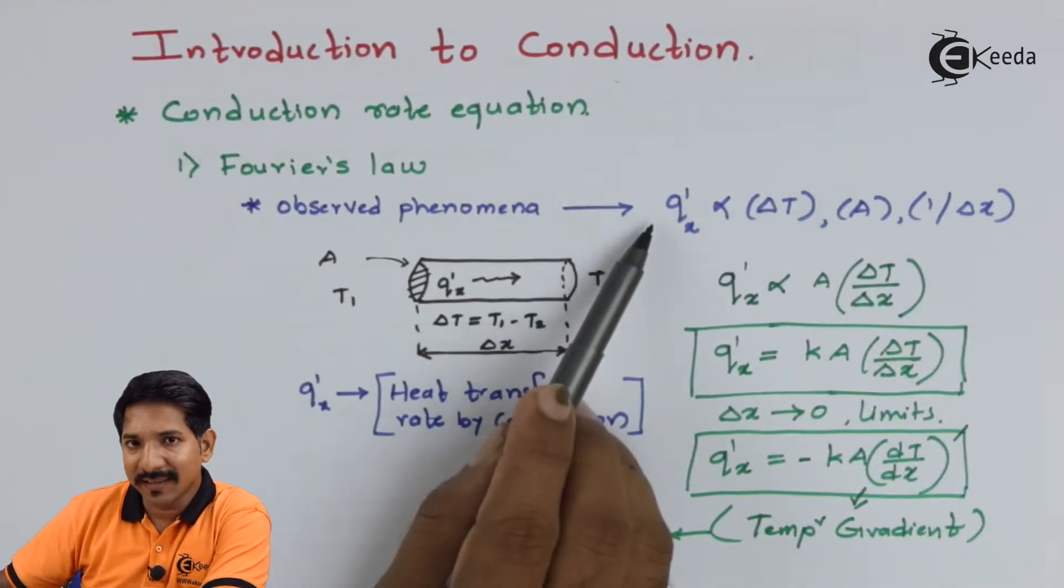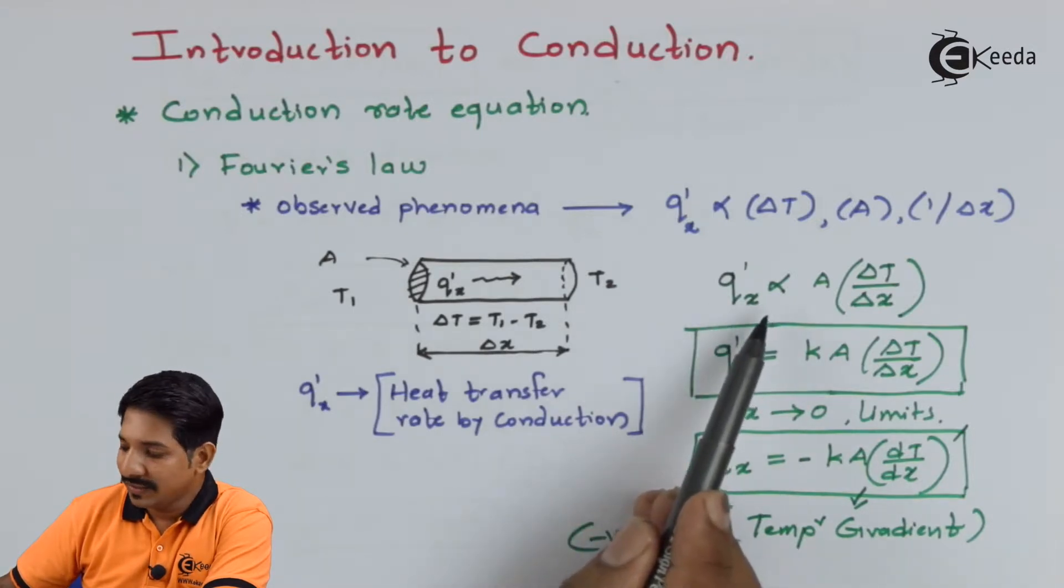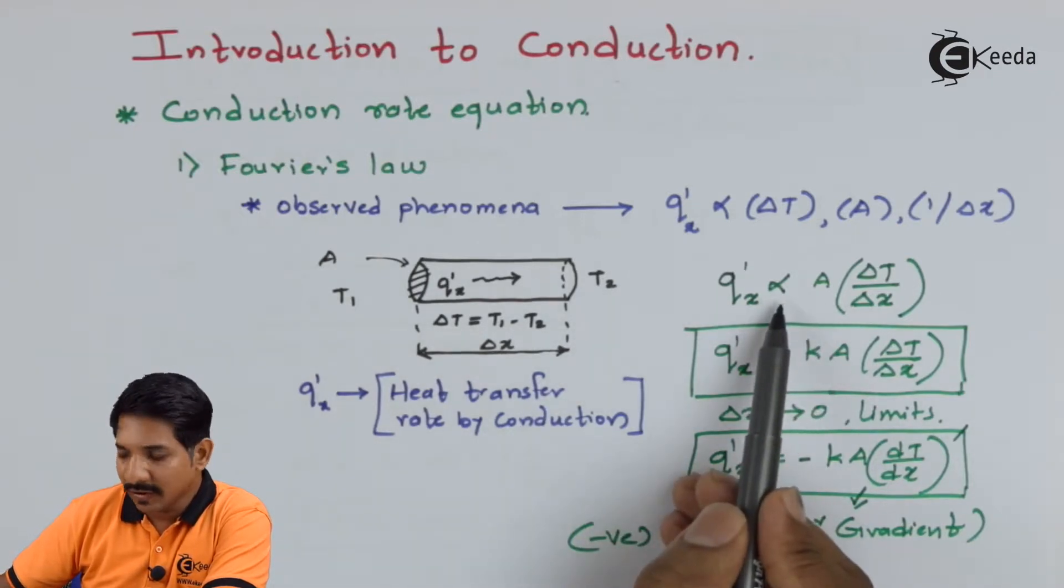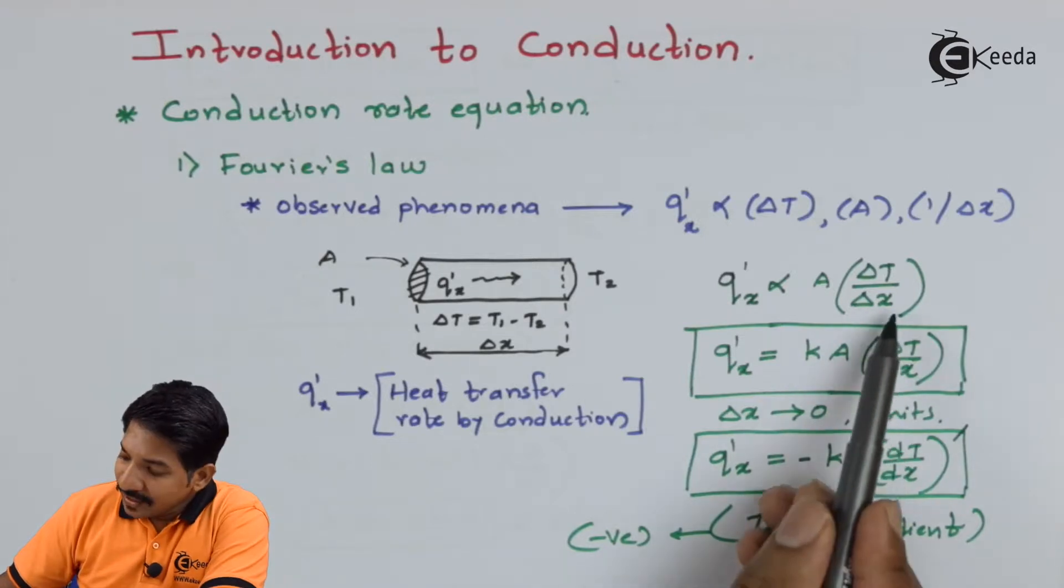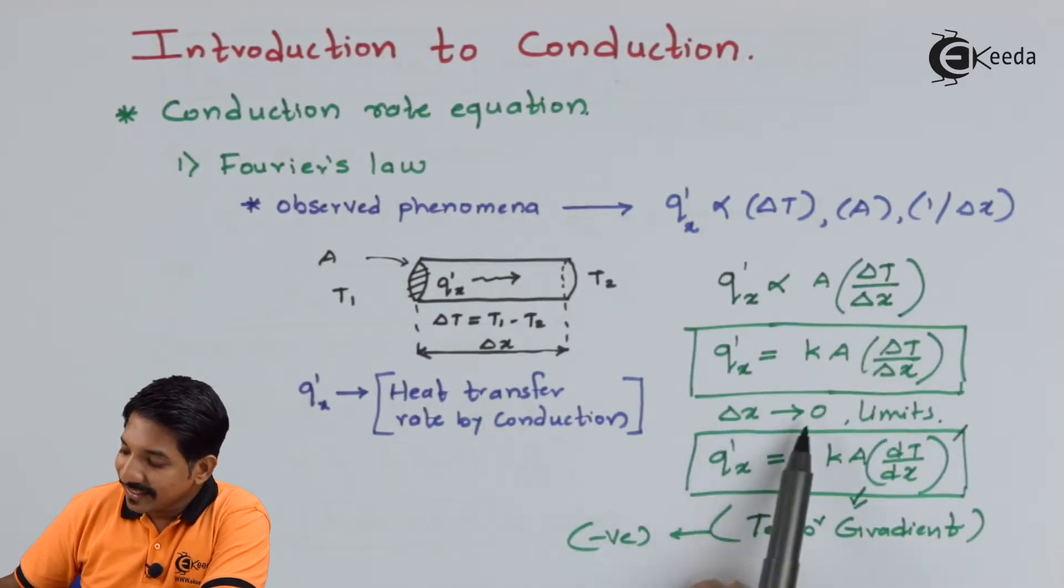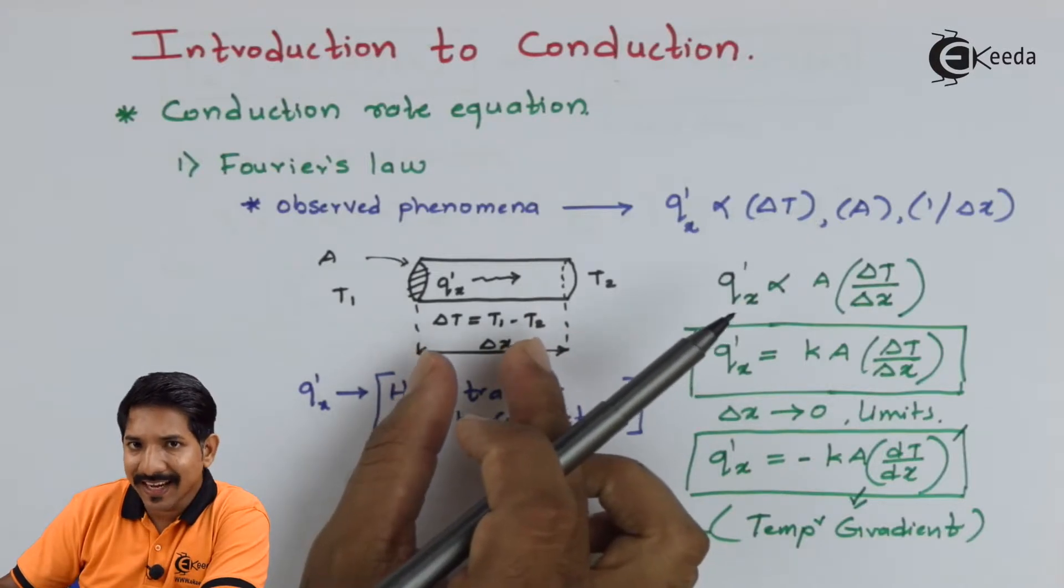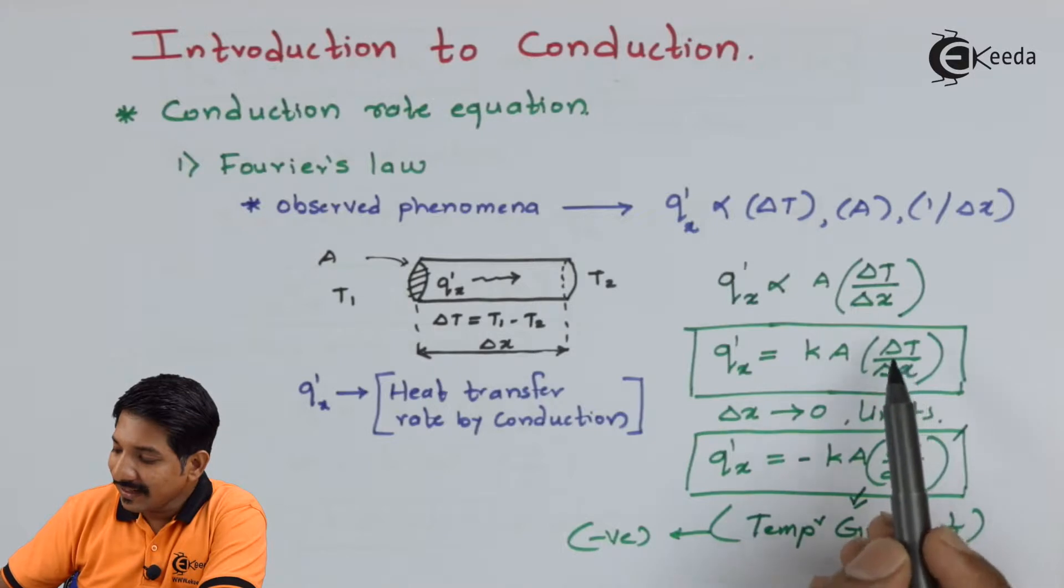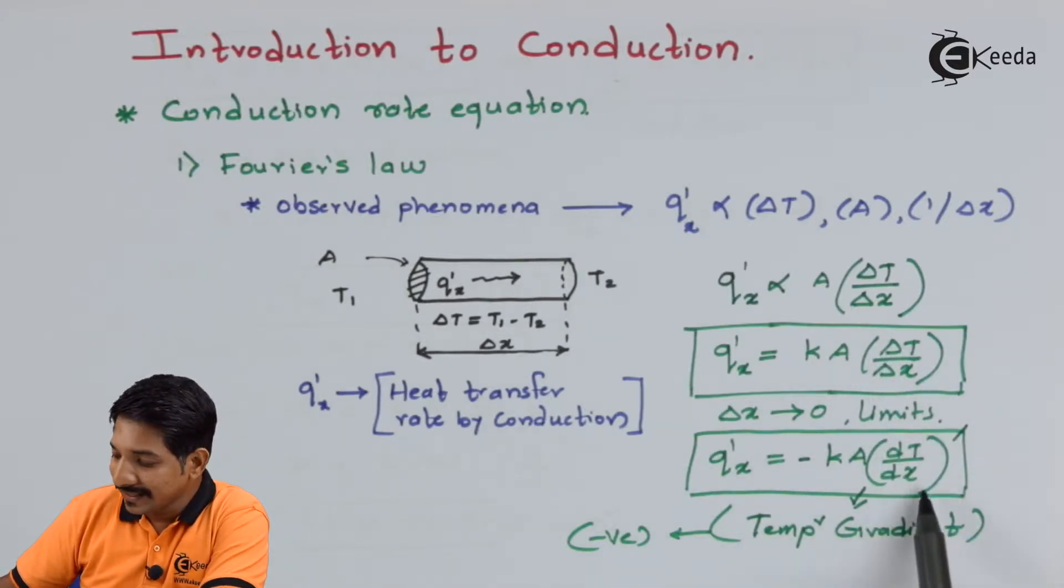So finally, what we get from the experimental data is Q'x, the heat transfer rate in x direction, is directly proportional to A delta T upon delta x. Now if I put delta x tends to 0, means if I reduce the length of the tube and apply the limits, I can get delta T by delta x can be written as dT by dx.